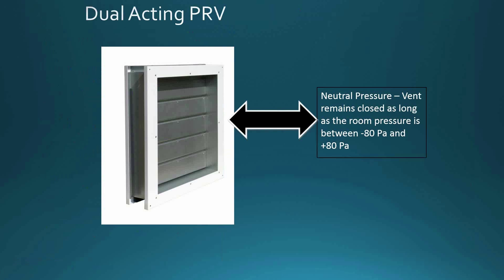With helicarbons, we may need a pressure relief vent in some cases, and that vent must open in both directions. For inerts, the peak pressure is always positive so the vent must relieve positive pressure. For helicarbons, the negative spike may be larger than the positive, so the vent must relieve in the negative direction as well. There is now a new class of vents called dual-acting pressure relief vents that allow pressure to be relieved in both directions.